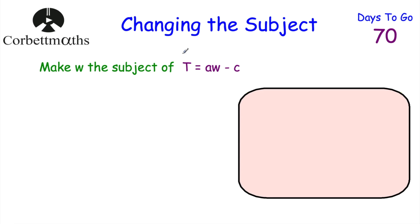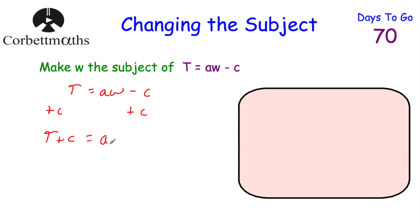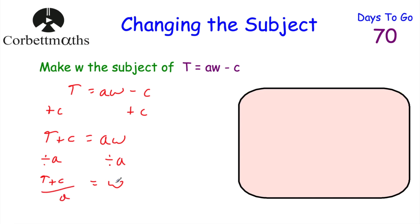We're going to rearrange this in a similar way to how we would solve an equation. We write T = AW − C. To get W on its own, the first thing is to get rid of the minus C, so we add C to both sides. That gives us T + C on the left-hand side, and just AW on the right-hand side. Now we want W on its own — this is A multiplied by W — so we divide both sides by A. The right-hand side gives us just W, and the left-hand side gives us (T + C) / A. So W = (T + C) / A — we've made W the subject.